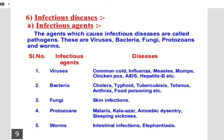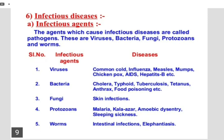Since human cells do not have a cell wall, penicillin will only affect bacteria and not human cells. Penicillin works against species of bacteria that build cell walls. However, since viruses do not use such pathways and have no cell wall, antibiotics do not work against viruses causing viral infections. Therefore, in the case of common cold, taking antibiotics will not help. If a cold is accompanied by a bacterial infection, antibiotics will help only against the bacterial infection, not the viral one.